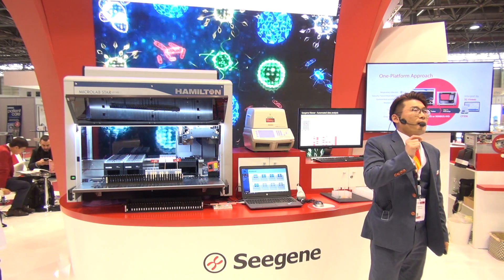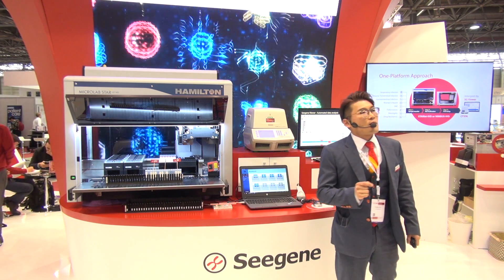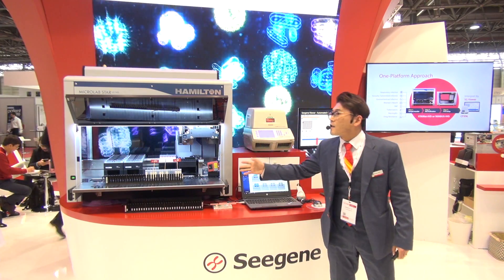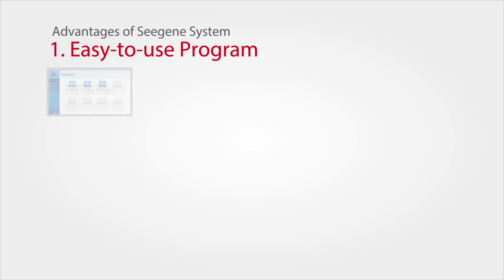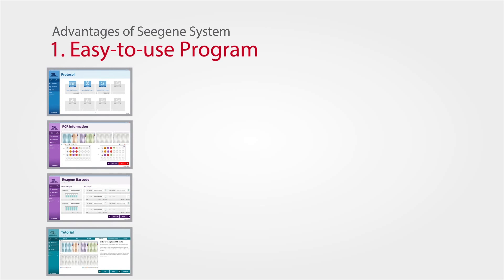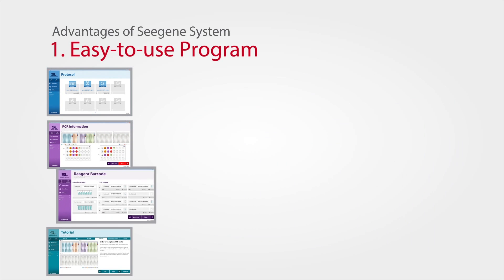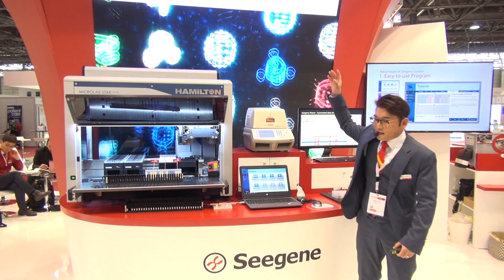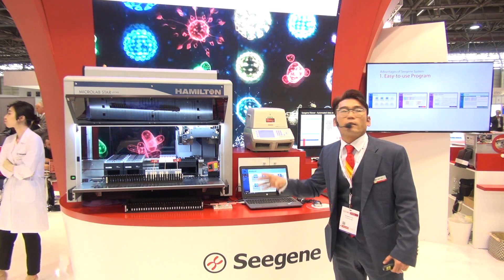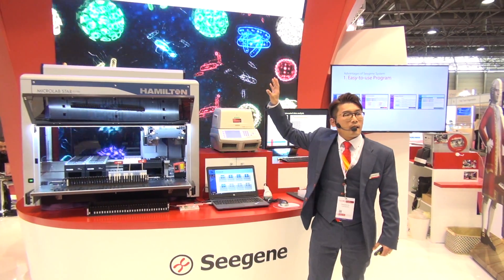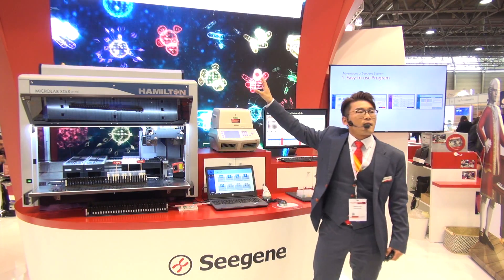Not only extraction, but also automatic PCR setup is performed in the same instrument simultaneously — a simple solution we call Seasons Launcher and Seasons Viewer. Seasons Launcher is the operating software for Nimbus and Starlet within Seasons One Platform Solution, containing protocol information, PCR information, reagent details, and a tutorial guide integrated into one software system. Each section has detailed information that you can simply access, modify, revise, and collect as needed. With just five major simple clicks, everything is done from extraction to PCR setup.